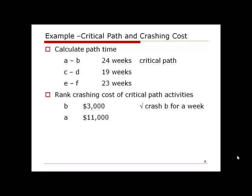After crashing activity B by one week, path AB is reduced from 24 to 23 weeks. Now we have two critical paths: AB and EF, both at 23 weeks. This is another reason we crash one time unit at a time — after each crash the critical path may change. Now, to reduce the project further, we need to crash both path AB and path EF.